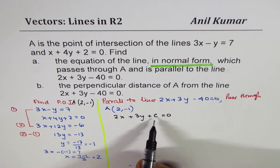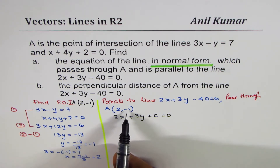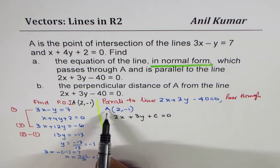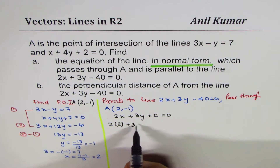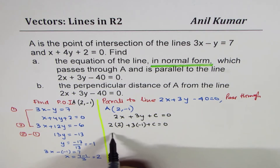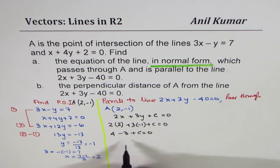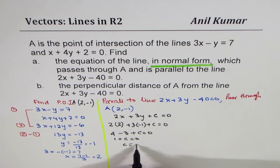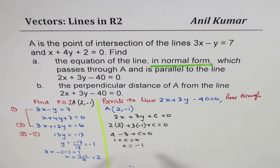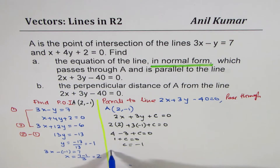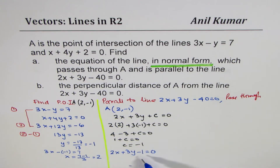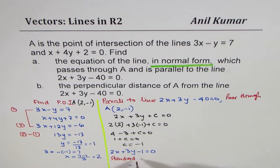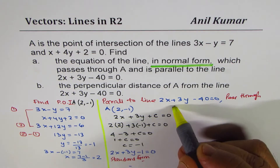The coefficients are going to be the same, so the equation will be 2x plus 3y plus c equals 0. We don't know the constant yet, so we calculate c by substituting the point (2, negative 1). That gives 2 times 2 plus 3 times (negative 1) plus c equals 0, which is 4 minus 3 plus c equals 0, so 1 plus c equals 0, meaning c equals negative 1. Therefore the equation is 2x plus 3y minus 1 equals 0 — written here in standard form.